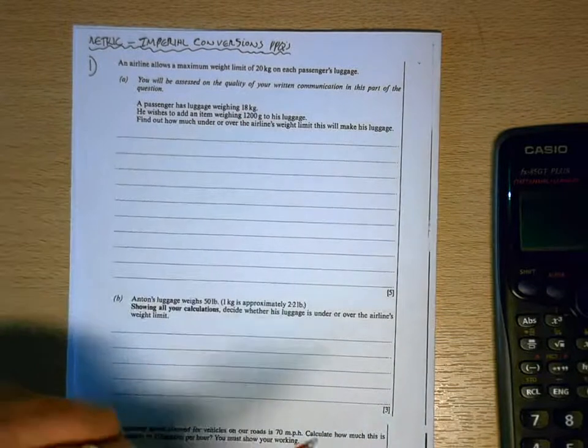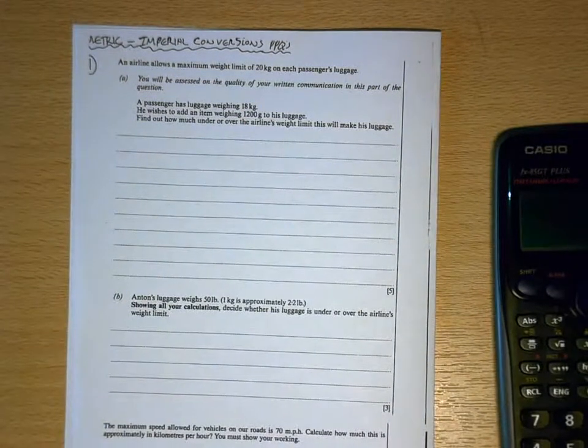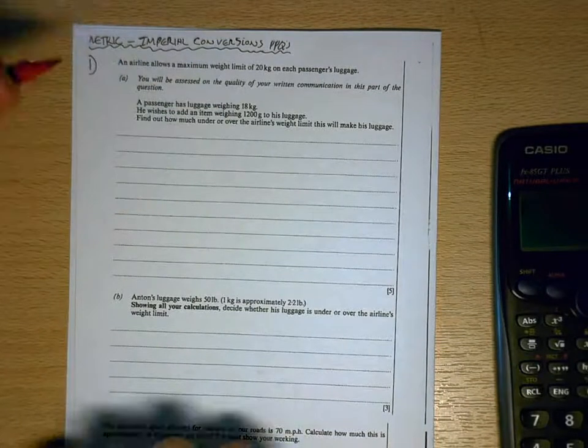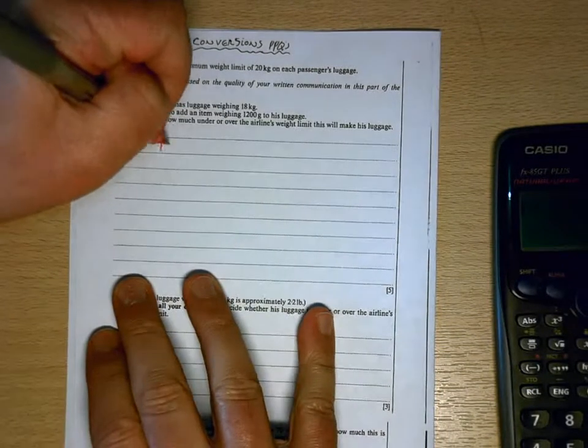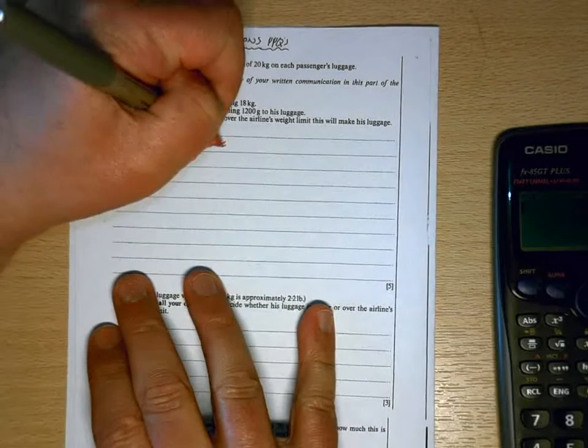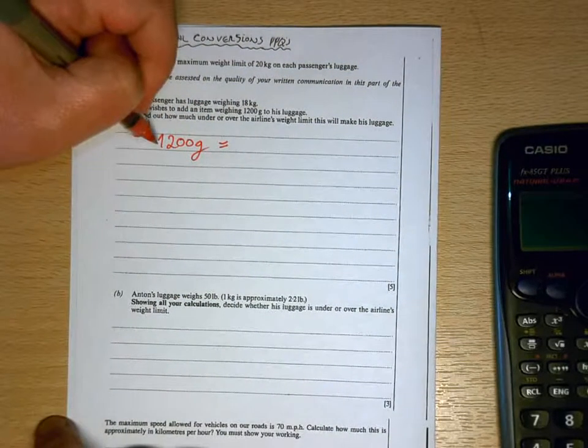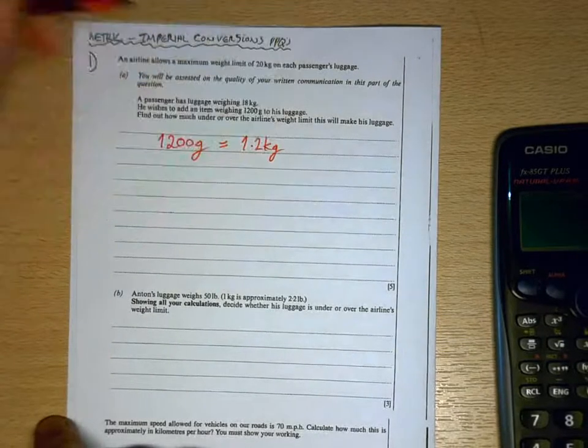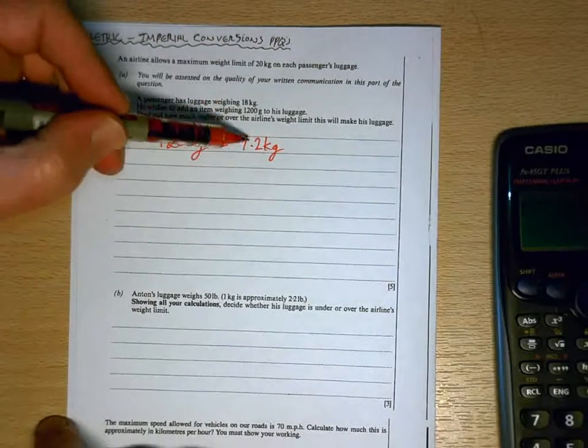Well, one of the things you need to know is that there are a thousand grams in a kilogram. So 1200 grams we can turn that into kilograms by dividing by a thousand, which would be 1.2 kilograms. Now I can add those two together.